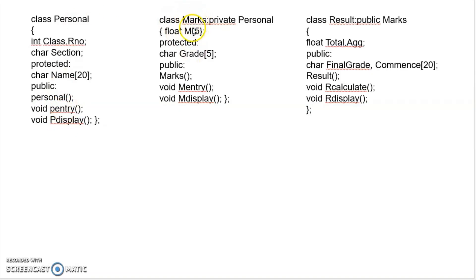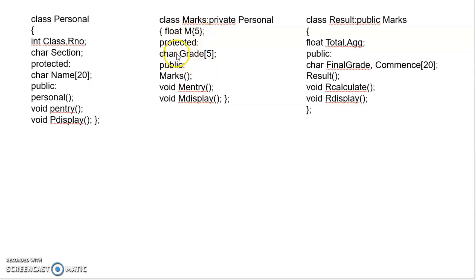The second class is Marks. This Marks class is derived from the Personal class in private mode. Data members and member functions are defined in the Marks class. The third class is Result, which is derived from Marks in public mode. In the Result class, data members and member functions are also defined.